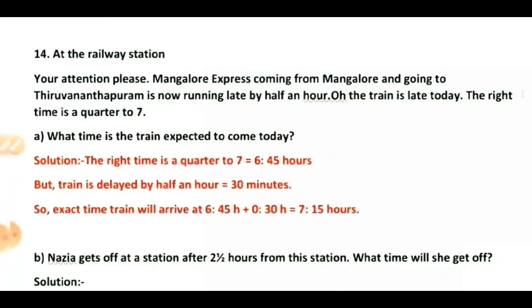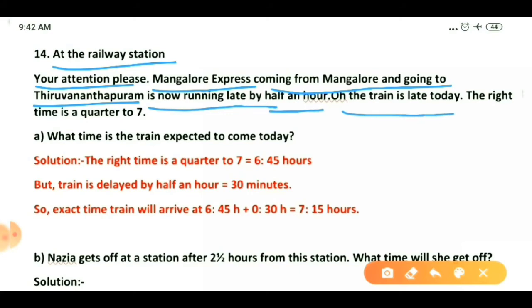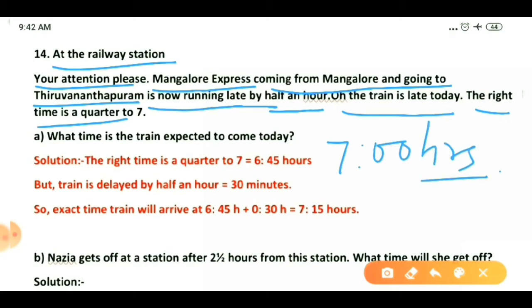The next question is about railway stations. The Mangalore Express, coming from Mangalore and going to Thiruvananthapuram, is running late by half an hour. The right time is quarter to seven. Note that train timing is always in hours on a 24-hour clock: seven means 7 hours in the morning, while evening seven o'clock would be 19 hours.